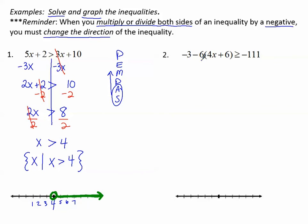Number 2, negative 3 minus 6 times the quantity 4x plus 6 is greater than or equal to negative 111. We can start by distributing negative 6 to get rid of these parentheses. Let's draw a line at the inequality symbol like we do when it's an equal sign for an equation. Negative 3, negative 6 times 4x is negative 24x, negative 6 times positive 6, negative 36, greater than or equal to negative 111.